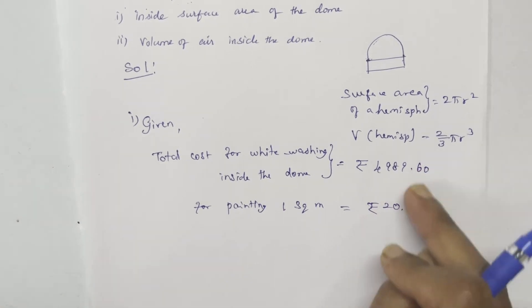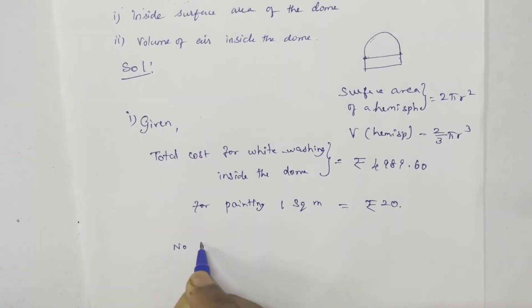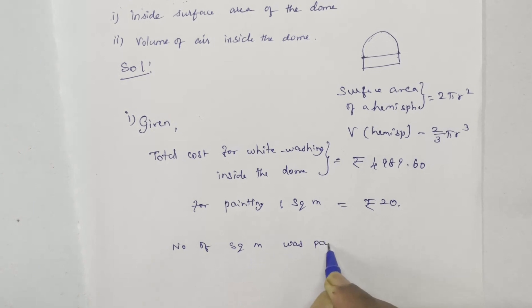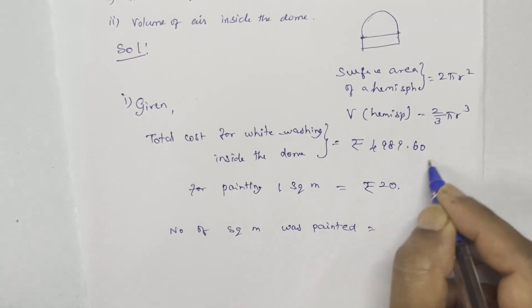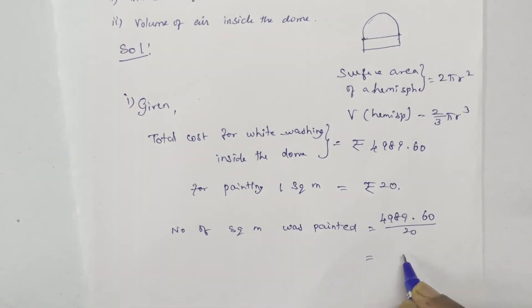How much area was painted? Number of square meters was painted equals this amount divided by 20.